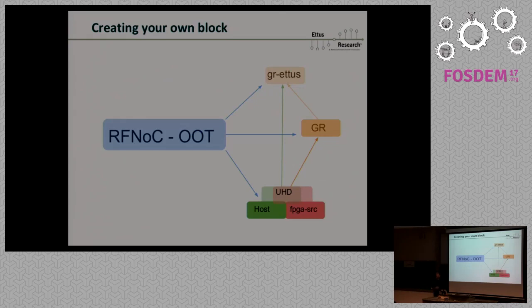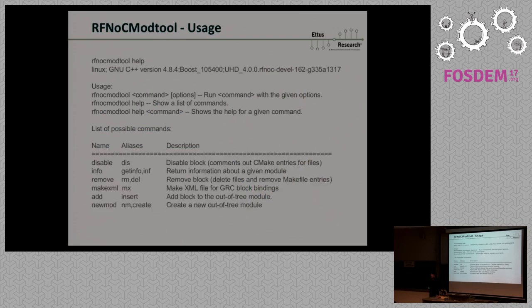One year ago, you had to know where all those files were to be placed. You had to know where Vivado would look for the Verilog, where UHD takes the block controller from. Your OOT module — the out-of-tree module — for RFNOC that Ettus provides already has some blocks written in RFNOC that you can use. But if you had an OOT module, you actually had to write everything in the same repository as your Ettus FPGA sources. That was quite a problem.